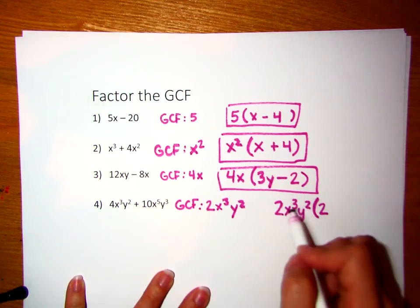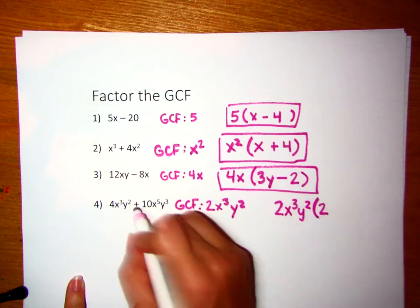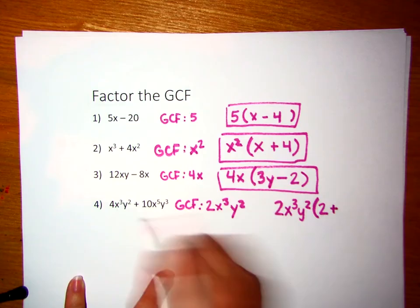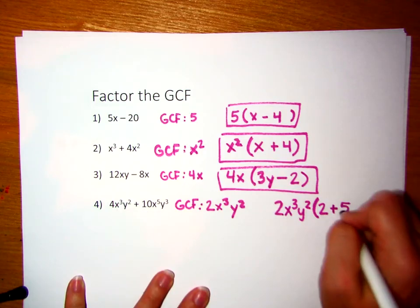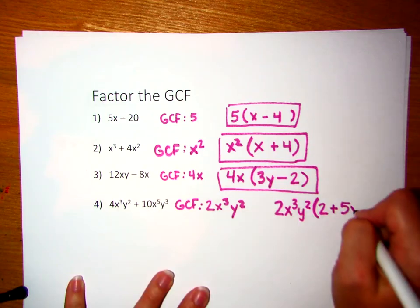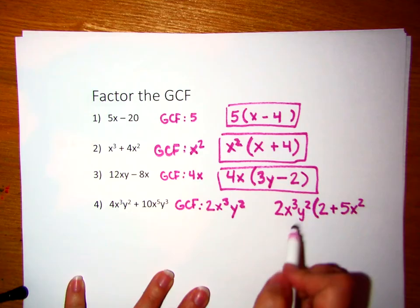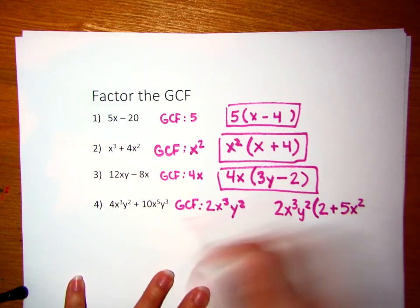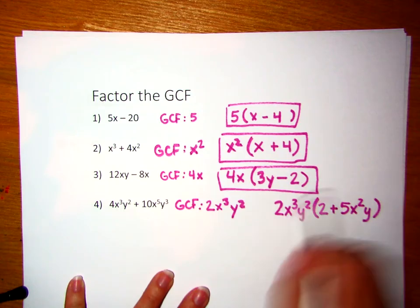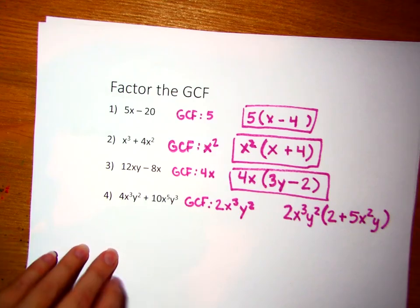If I multiplied this times 2, I would get 4x cubed y squared. Now we bring the addition sign and do it again. 2 times what gives me 10? 5. x cubed times what gives me x to the 5th? x squared. y squared times what gives me y cubed? Just a y. Now you can double check if you distribute it to both pieces, it would come back to this form. So that is just GCF right there.